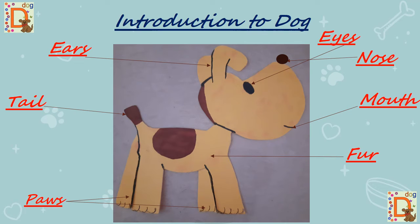Dogs keep on wagging their tail, especially when they are very happy or in a good mood. They also waggle their tail when they are curious or anxious.